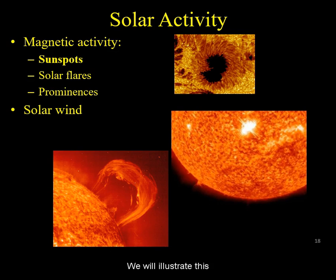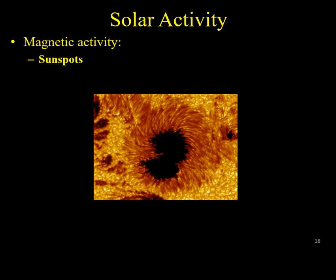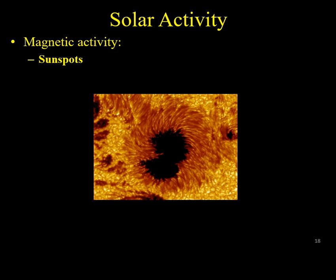We will illustrate this through sunspots. A sunspot is a relatively dark area on the surface of the Sun due to the plasma being at a lower temperature inside of it.